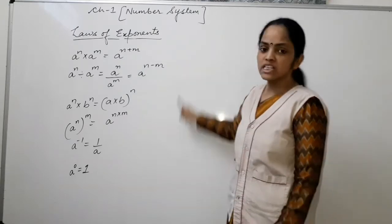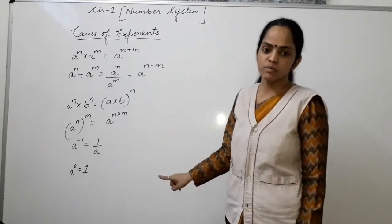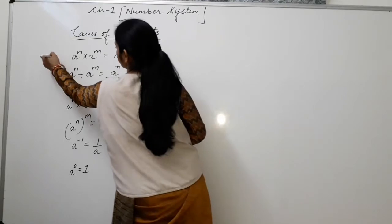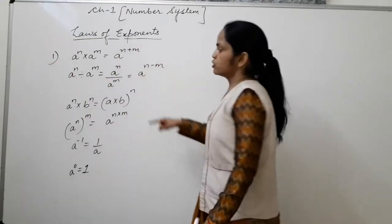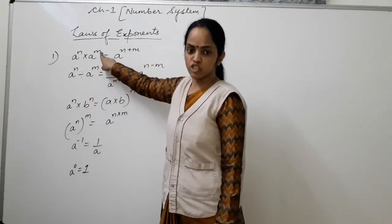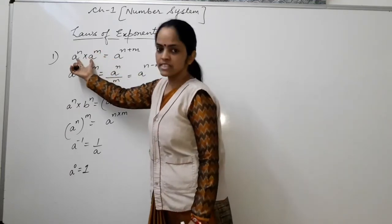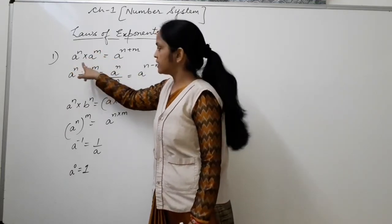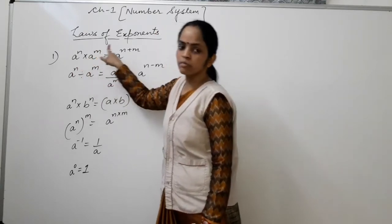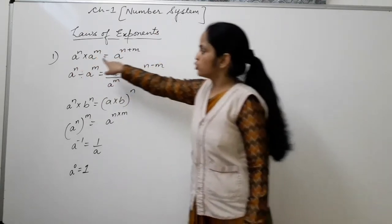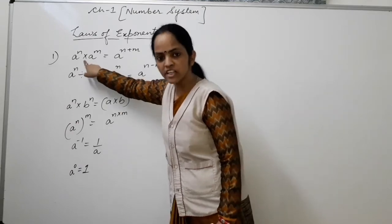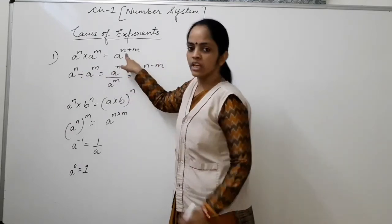We have 6 laws of exponents to study here. The first law is: a to the power n multiplied by a to the power m. This means if bases are same and they are in multiplication, then powers will be added.